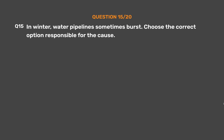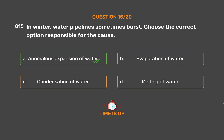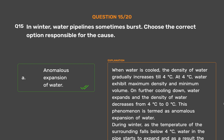Question number 15: In winter, water pipelines sometimes burst. Choose the correct option responsible for the cause. Option A: Anomalous expansion of water. Option B: Evaporation of water. Option C: Condensation of water. Option D: Melting of water. The correct answer is Option A, Anomalous expansion of water. When water is cooled, the density of water gradually increases till 4°C. At 4°C, water exhibits maximum density and minimum volume. On further cooling, water expands and the density decreases from 4°C to 0°C. This phenomenon is termed anomalous expansion of water. During winter, as the temperature falls below 4°C, water in the pipe starts to expand and the pipe bursts.